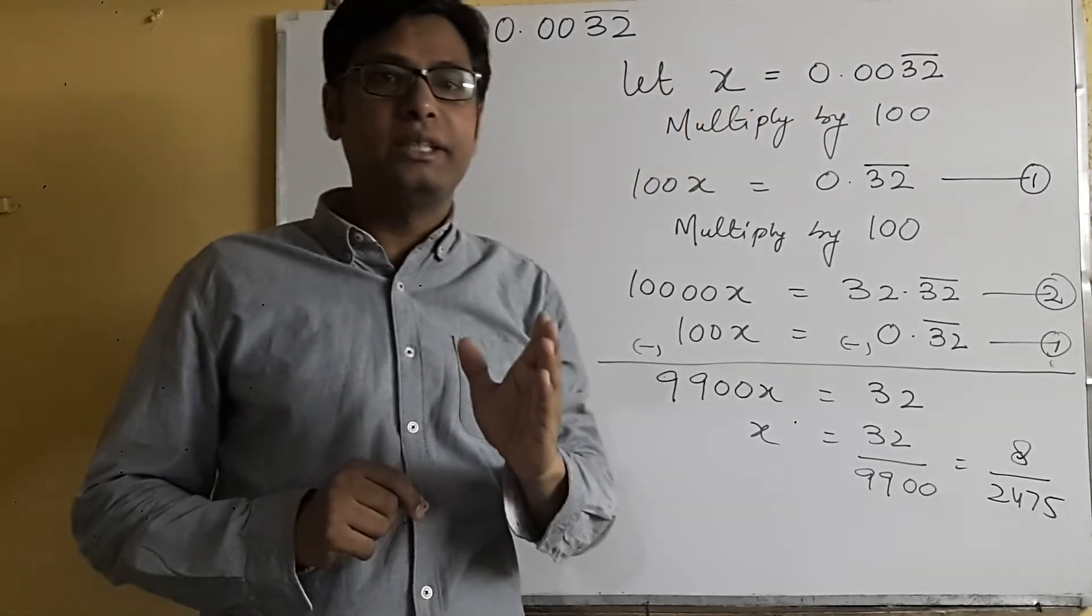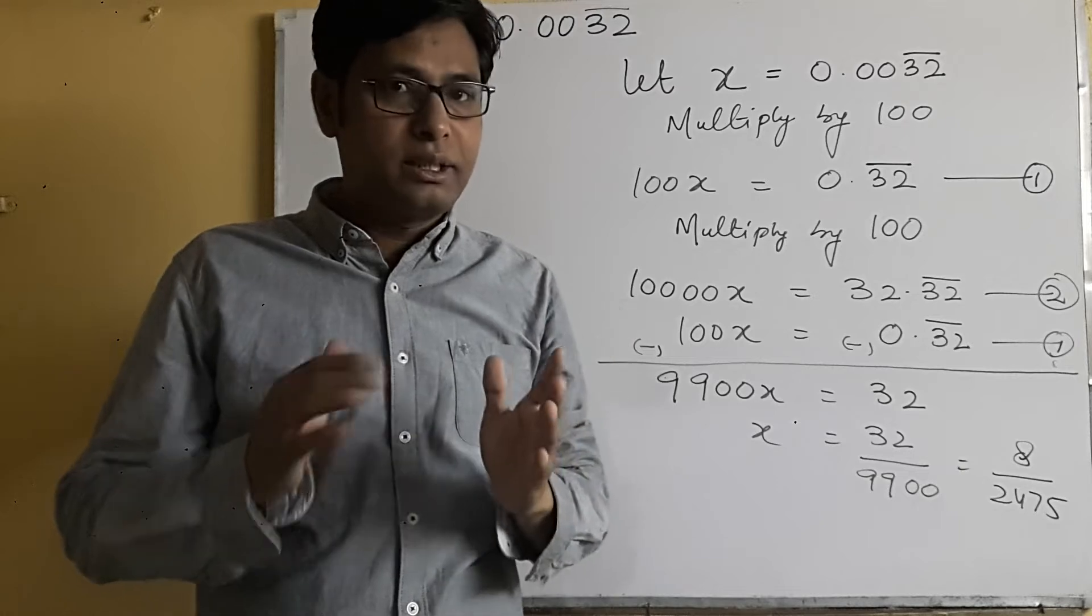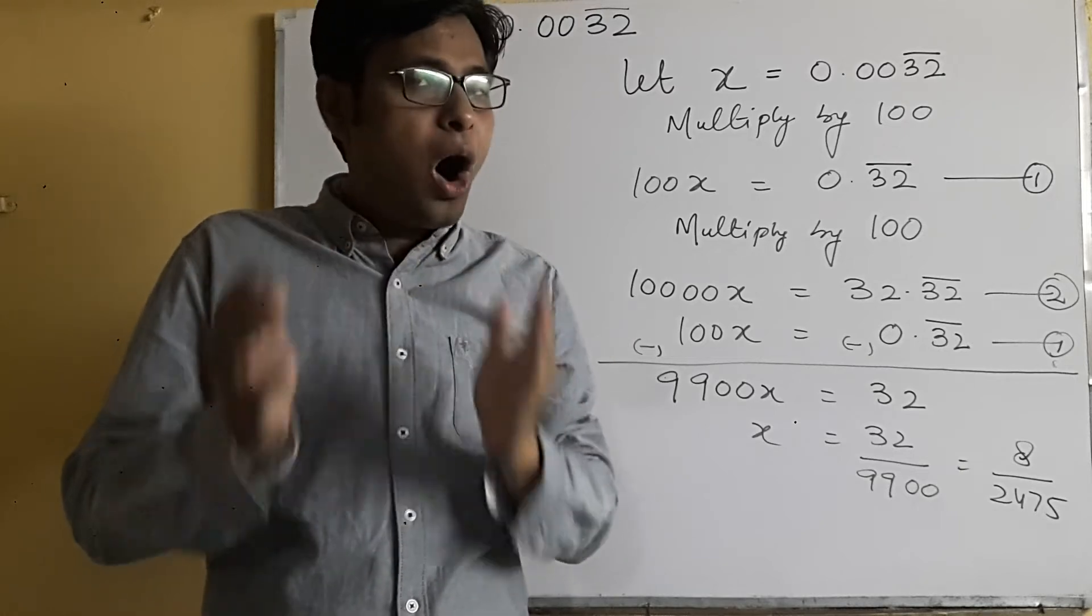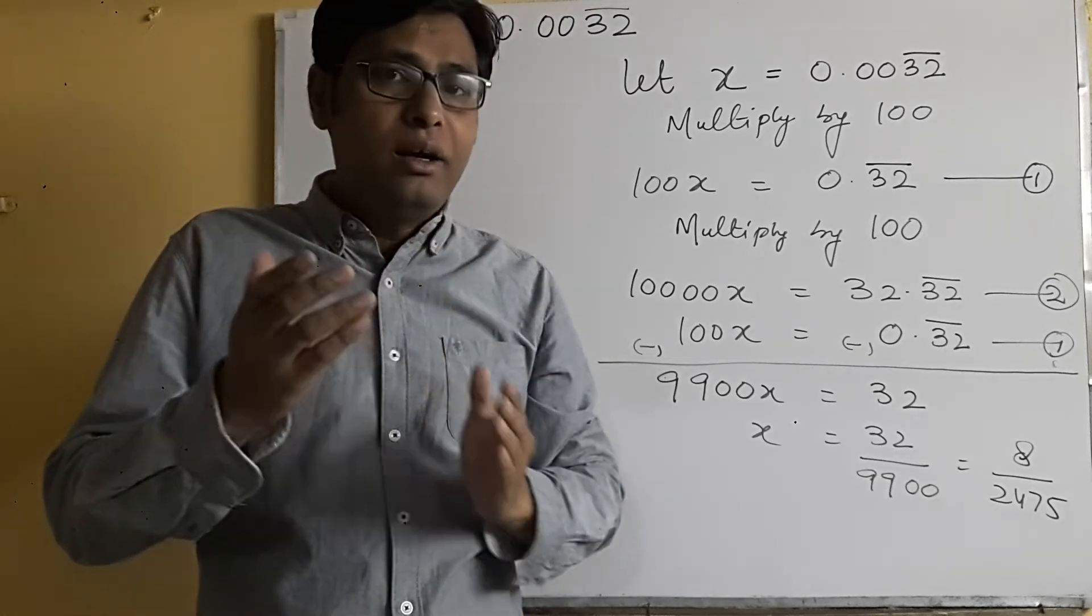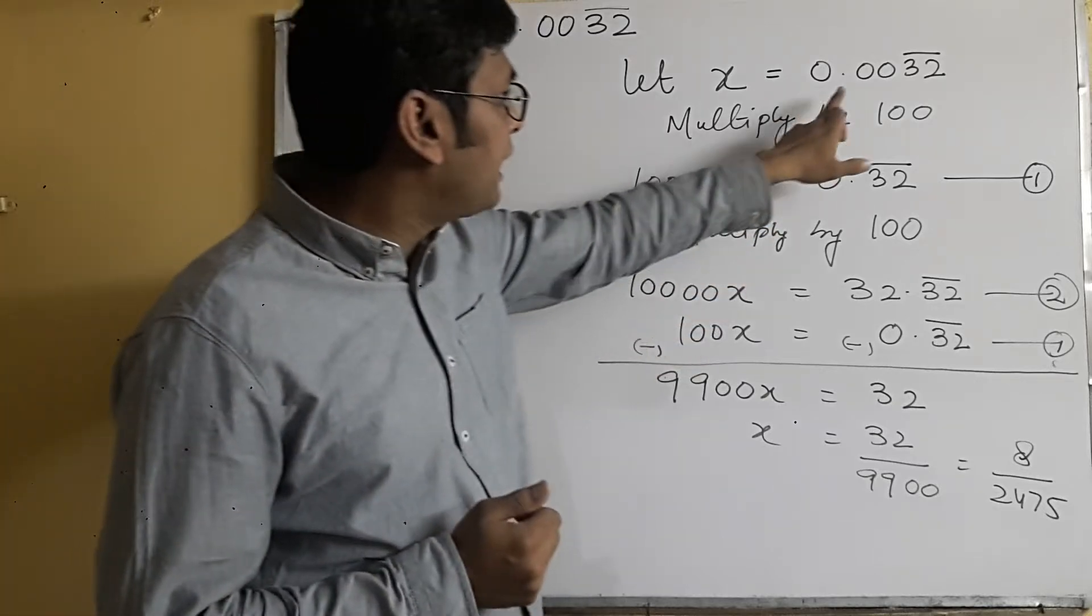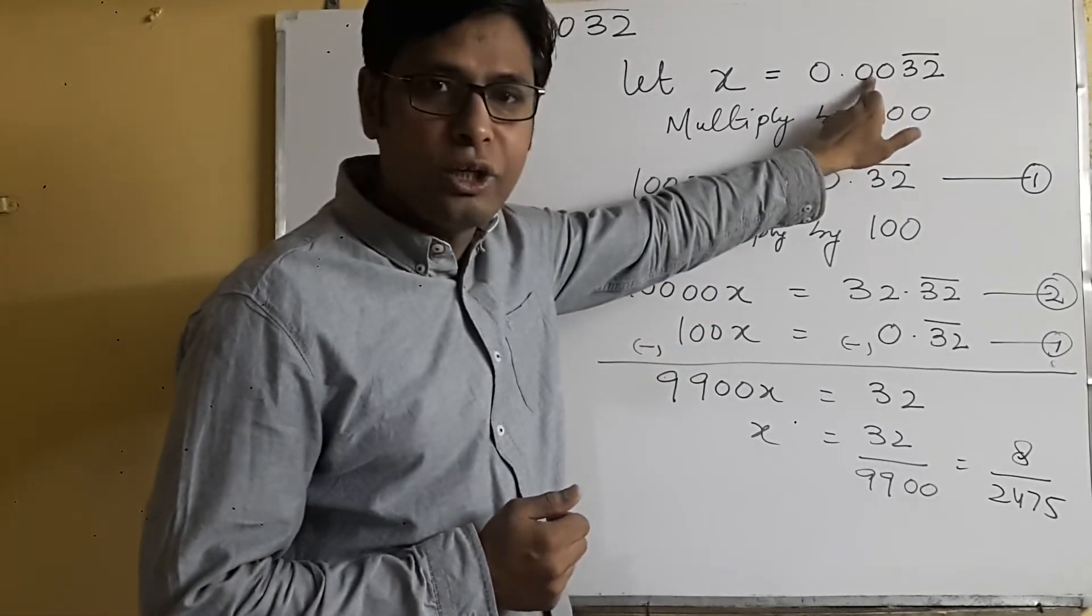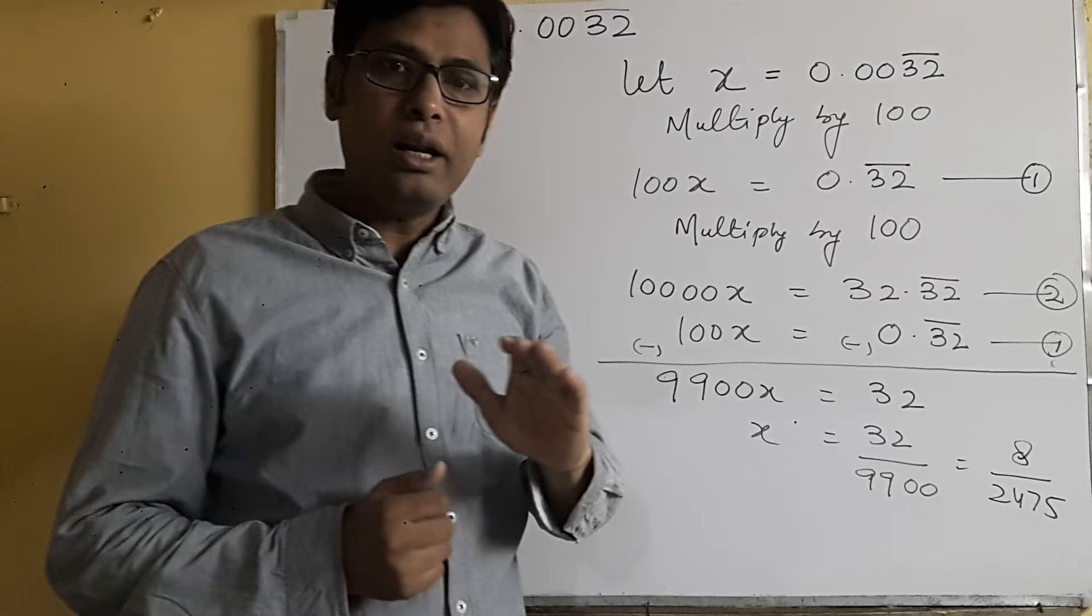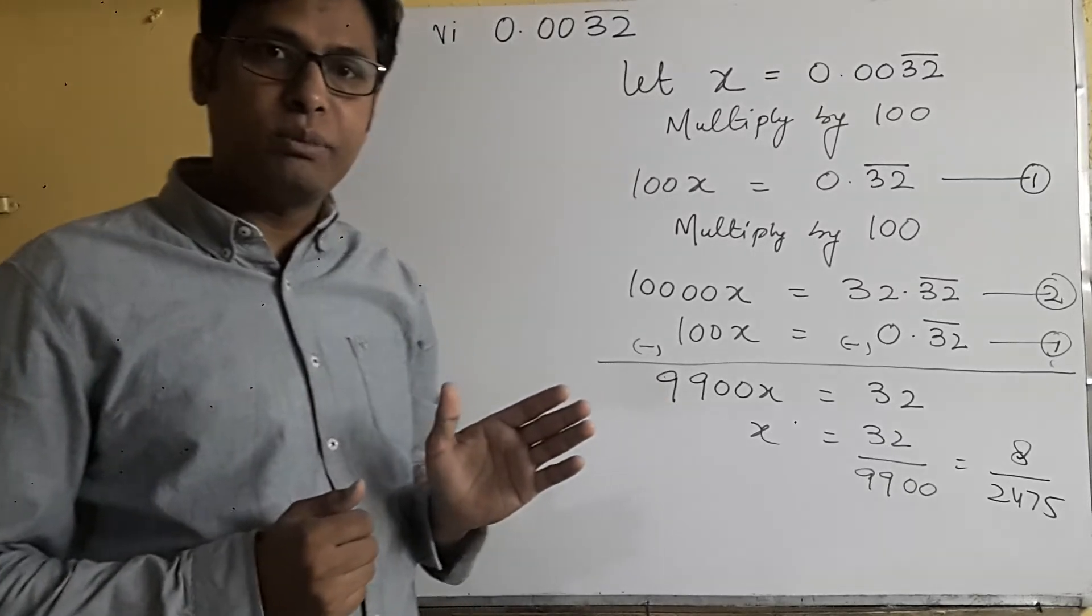Now we will see how many digits are without bars after the decimal. How many digits which are without bar? So we can see that there are two digits. There are two zeros which are without bars after the decimal.